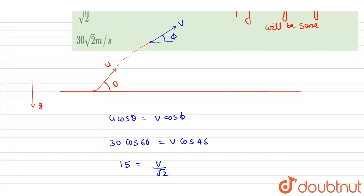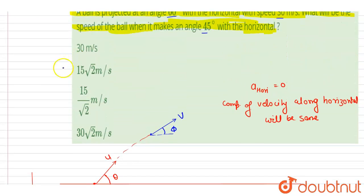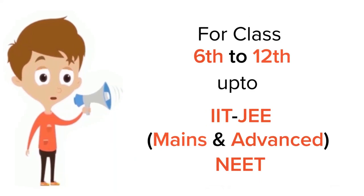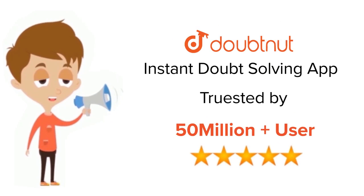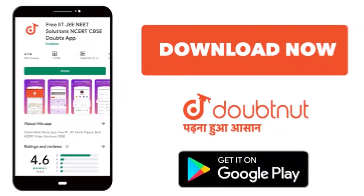Right, now you can check for the option. 15 root 2 meters per second is B, so B here is the correct answer. Thank you. For class 6-12, IIT-JEE and NEET level, trusted by more than 5 crore students, download Doubtnet app today.